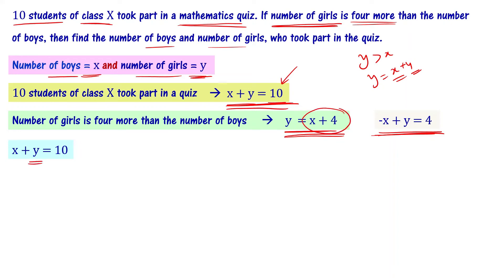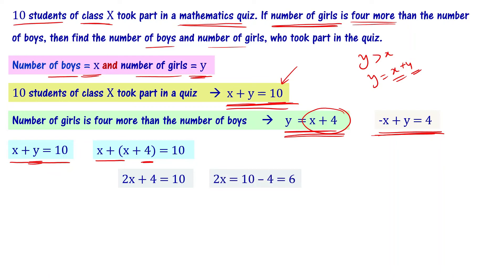Using the substitution method, we substitute y with x plus 4 in the first equation. So x plus (x plus 4) equals 10, which gives us 2x plus 4 equals 10. Therefore, 2x equals 10 minus 4, which is 6. So x equals 6 divided by 2, which equals 3.